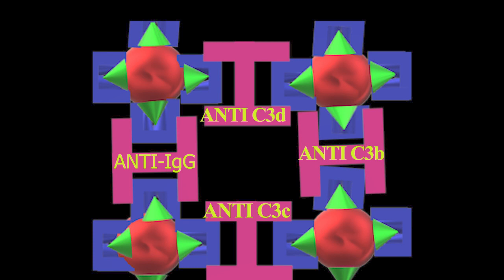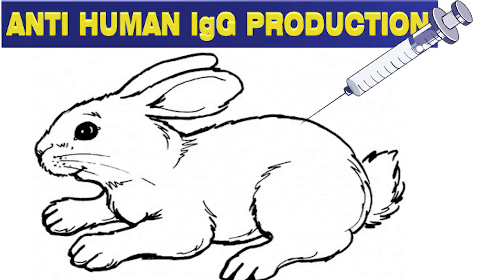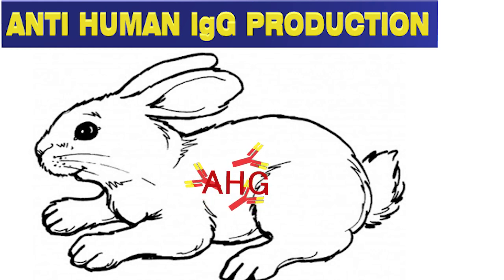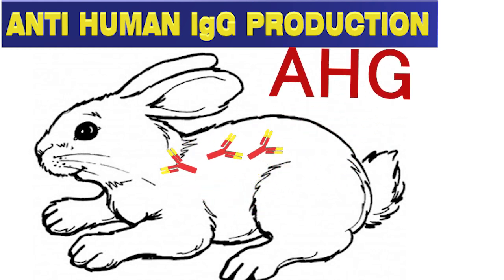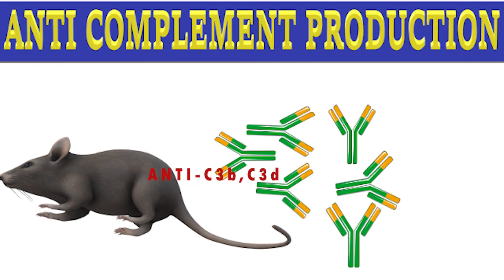Poly-specific anti-human globulin contains anti-human globulin IgG type, anti-complement 3B, and anti-complement 3D. When human IgG antibodies are immunized to rabbits, they produce antibodies to human IgG. IgM anti-complement 3D are produced from mouse spleen cells by immunizing them.